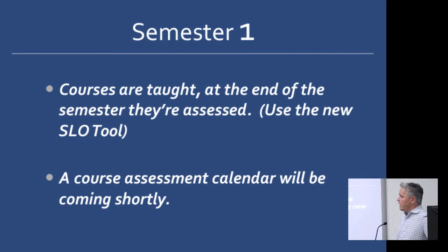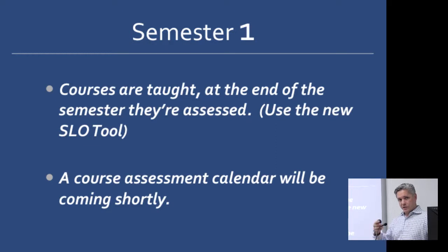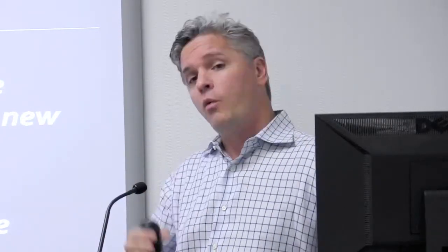We're going to be using the new student learning outcomes tool, which you can download on the web page. A course assessment calendar is how you'll know which course is up for assessment — the question comes up quite often: are we always assessing after we teach every single course? The answer is no. There is a course assessment calendar, and once you look at it for your division you'll know when that course comes up. For example, if you're assessing English 101 in the spring, the next semester it'll be in phase two, then phase three, and you may not see it again for a year and a half or two years.